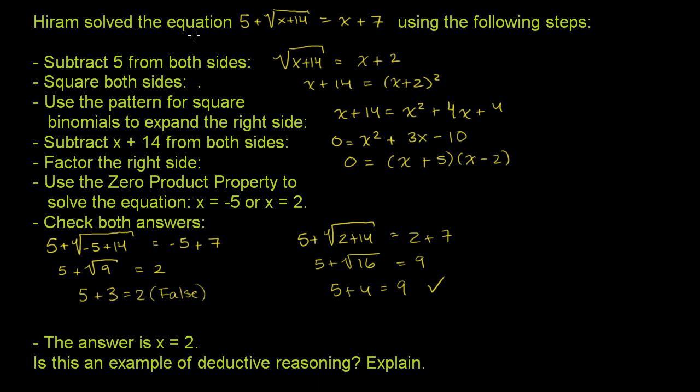So they tell us that Hiram solved the equation 5 plus the square root of x plus 14 is equal to x plus 7 using the following steps. Let's see what he did.